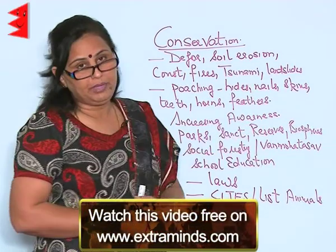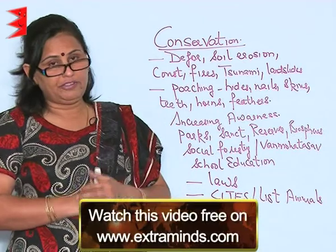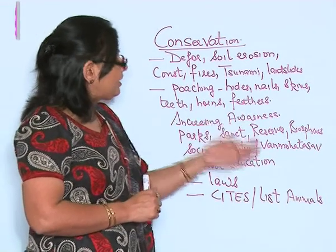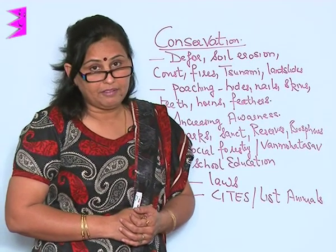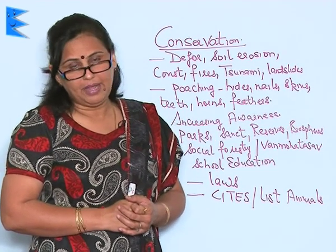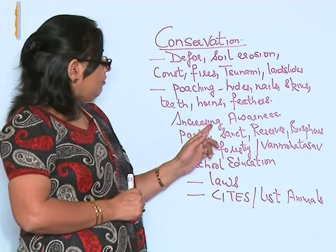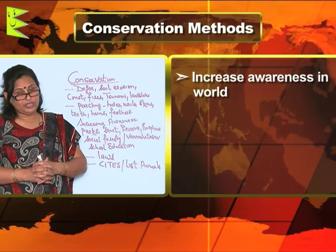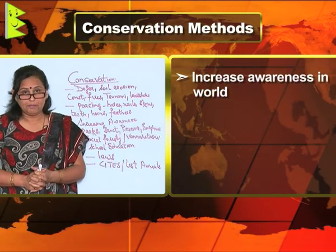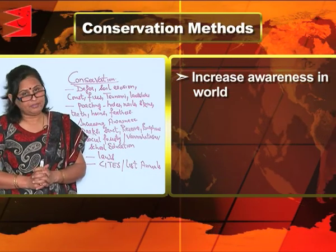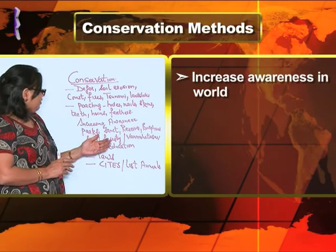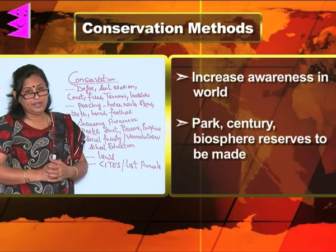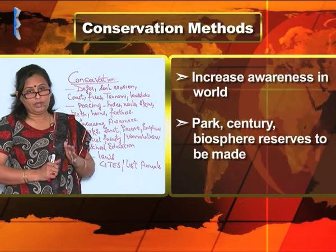These are the reasons for the depletion of natural vegetation and wildlife in the world. To conserve them, we need to increase awareness that natural vegetation and wildlife are an important aspect of human survival. We also need to establish parks, sanctuaries, and biosphere reserves in order to conserve natural wildlife.